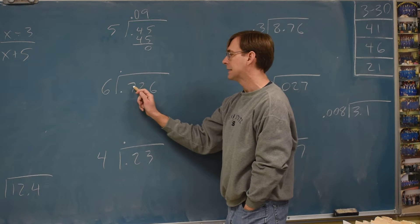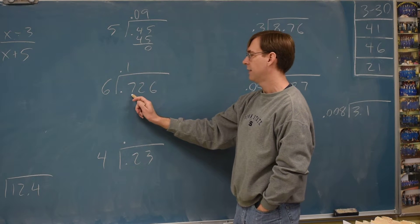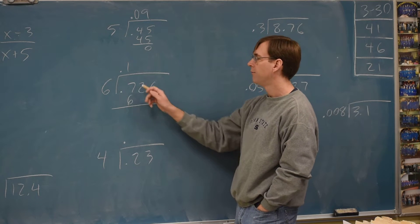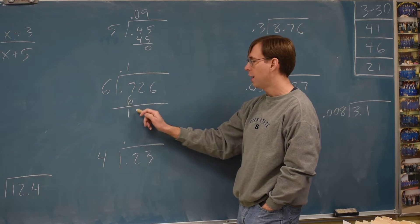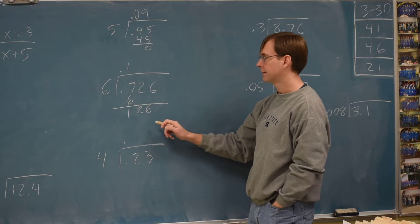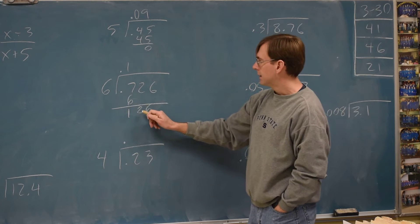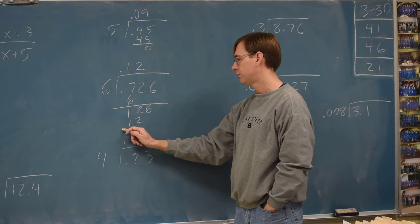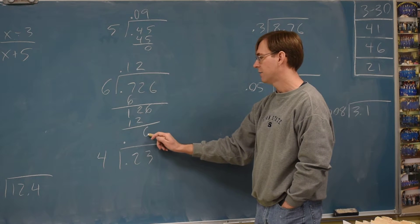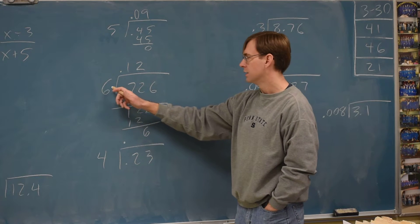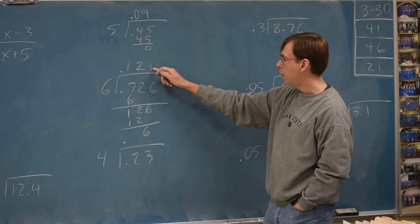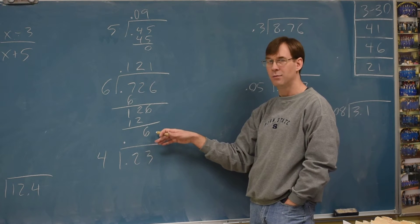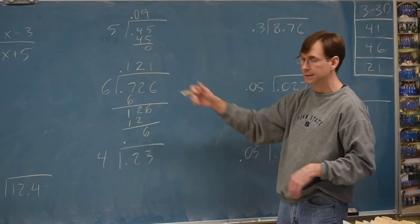For this we're going six into seven goes once. Gives me a six. I need to write this work now because there's more still to come. Subtracting gets me a one. Drop to twenty-six. Six into twelve is going to be two, which gets me a twelve. And the only thing left is a six. And six into six is going once evenly. So point one two one is the answer there.